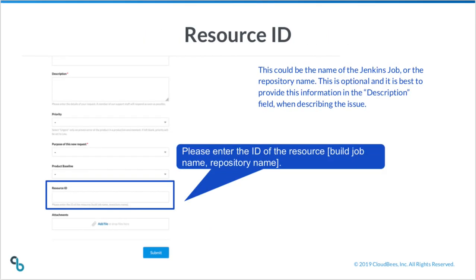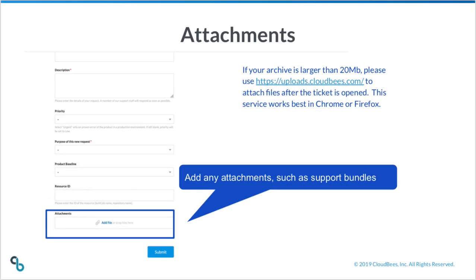The resource ID could be the name of a Jenkins job or the repository name. This too is optional and is sometimes provided in the description field above. Finally, add any attachments such as support bundles. If your archive is larger than 20 megabytes, please use uploads.cloudbees.com to attach files after the ticket is open. This service works best in Chrome or Firefox.